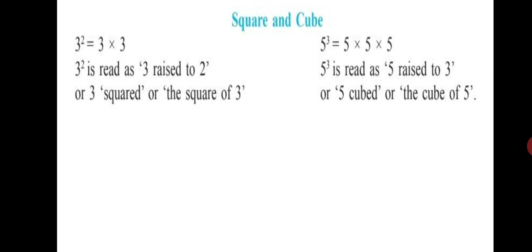3 raised to 2 is equal to 3 multiplied by 3. This you have already learnt in the previous practice set. It is read as 3 raised to 2, or 3 squared, or the square of 3. When the index is 2, we read it as the square of that particular number.